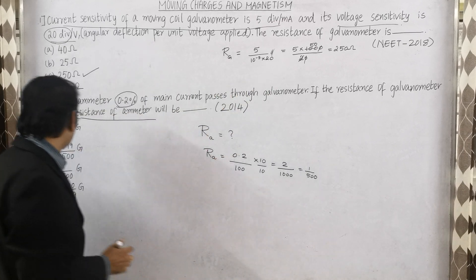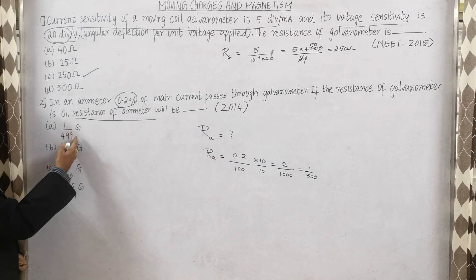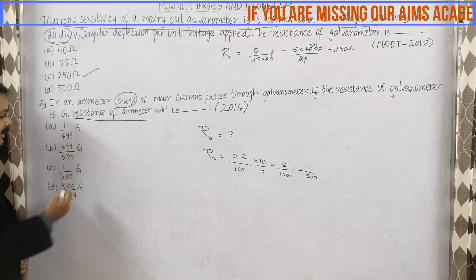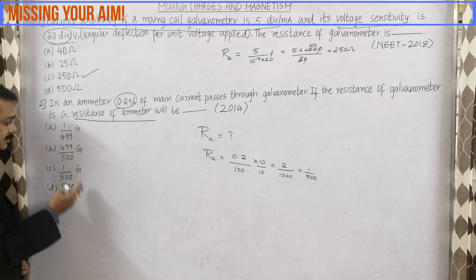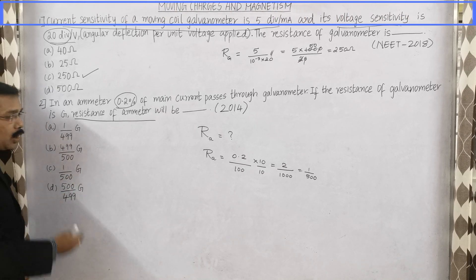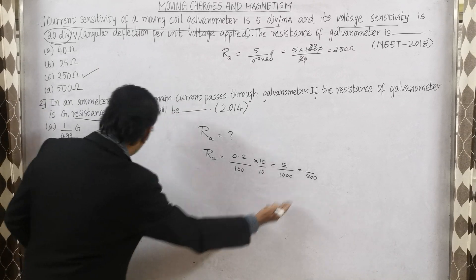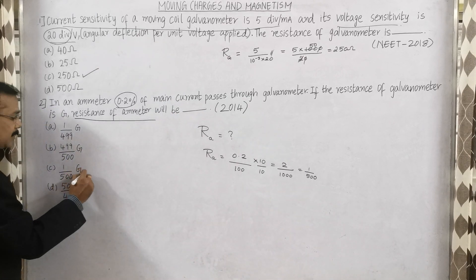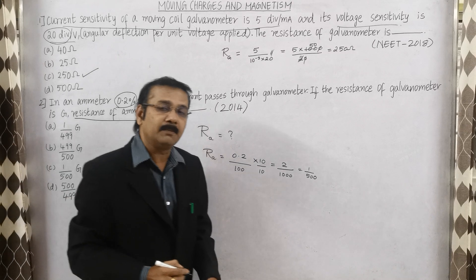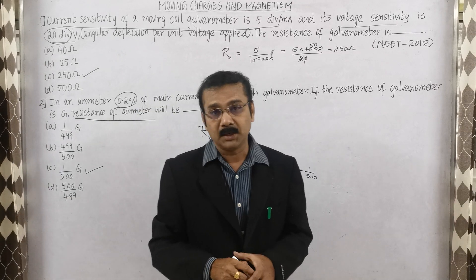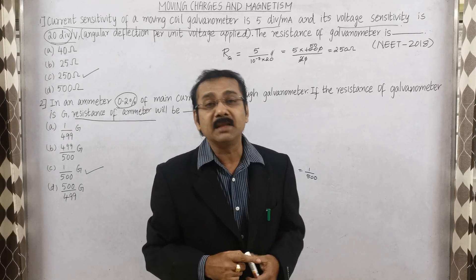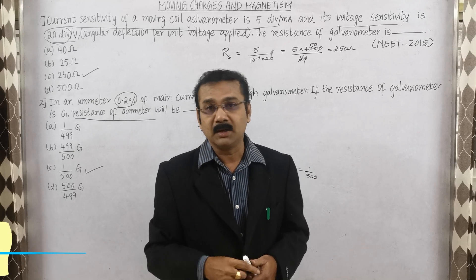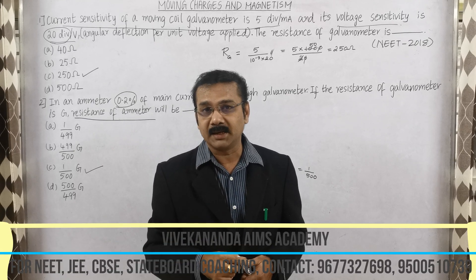Looking at the options — 1 by 499, 499 by 500 G, 1 by 500 G, and 5 by 499 G — the answer matches option C: 1 by 500 G. So our answer is G divided by 500. Again, this sum was done without any formula and any concept, in a fraction of a second and with not more than one step.